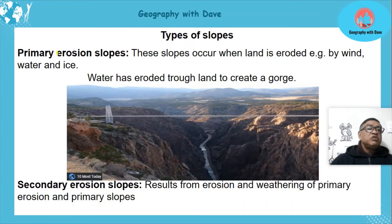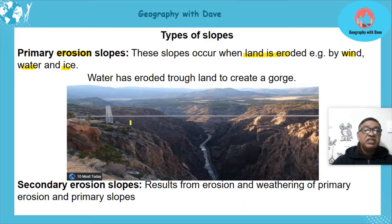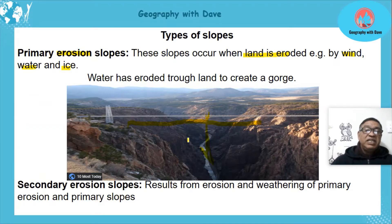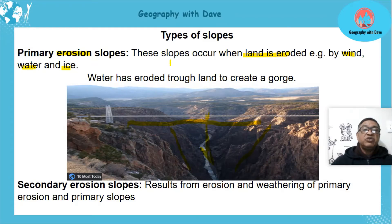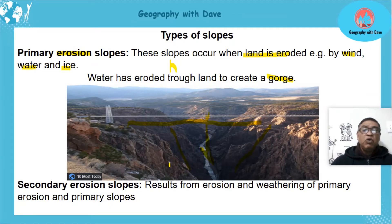Then we have slopes caused by erosion. These slopes occur when land is eroded — by wind, water, or ice glaciers. Here we have an example of water erosion: the surface was flat, then a river eroded into it. As it eroded it cut through the land, widening at the top while the bottom stays narrow, forming a gorge with slopes on it.